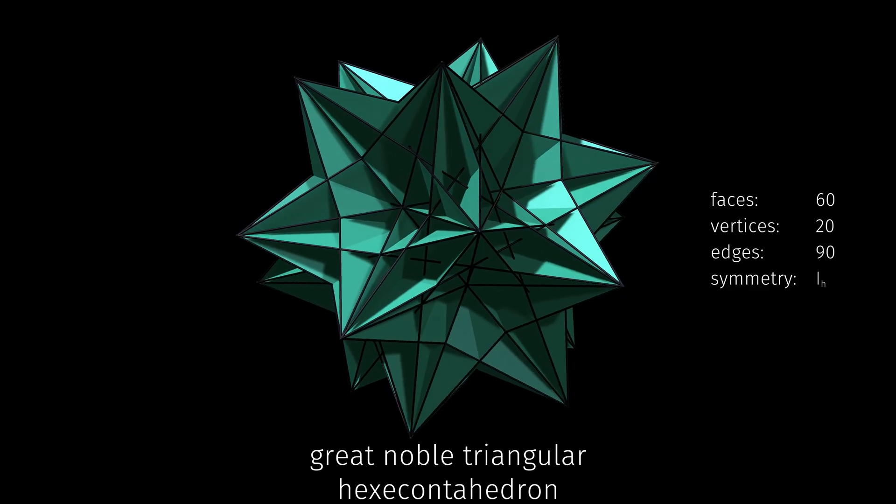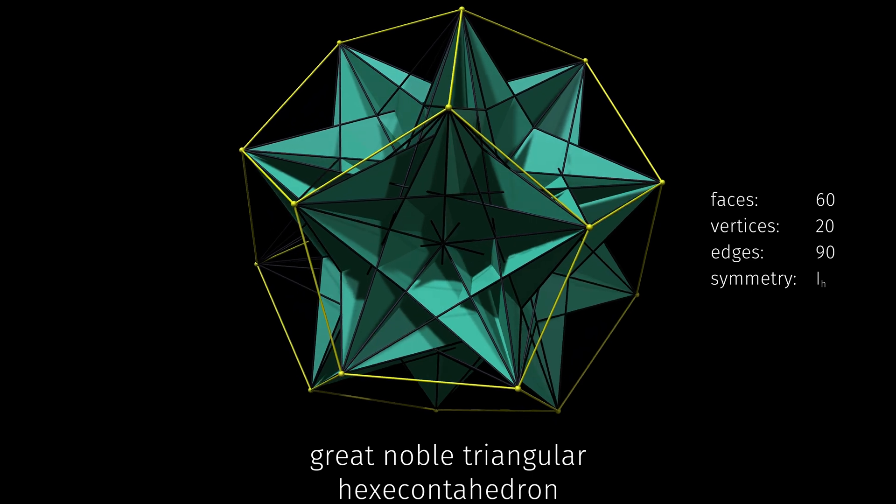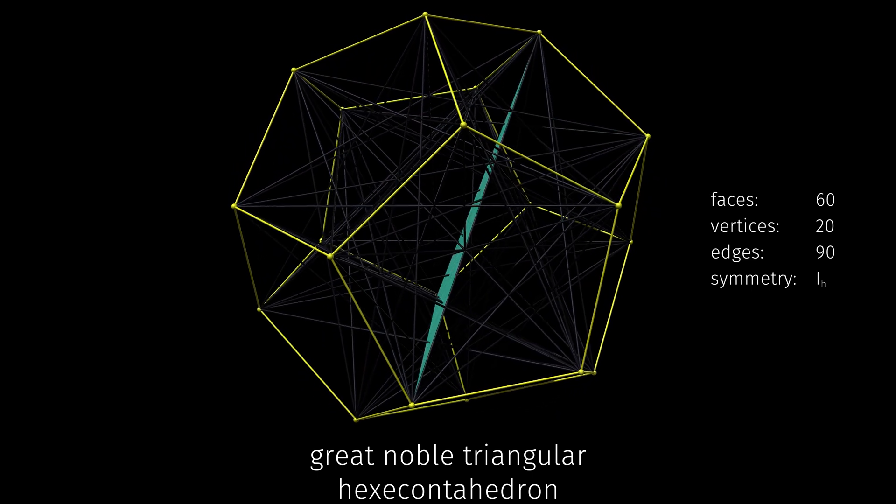Here are the dodecahedron's vertices, with a single triangular face connecting three of them. This is called a faceted dodecahedron.